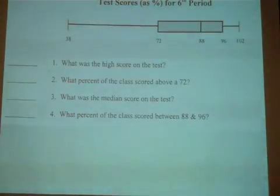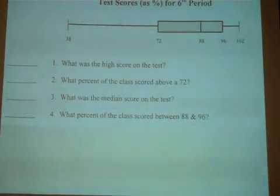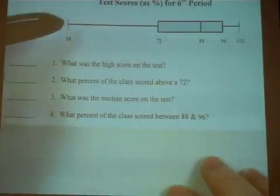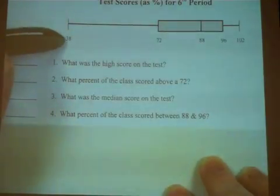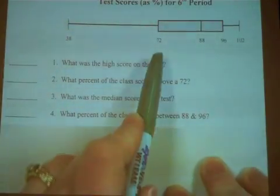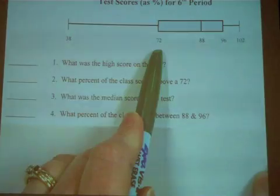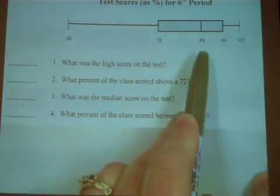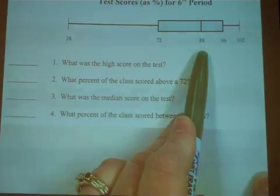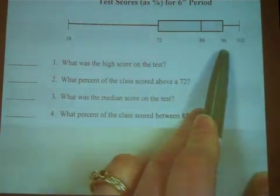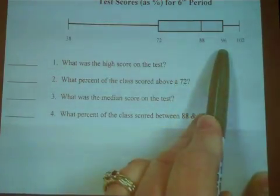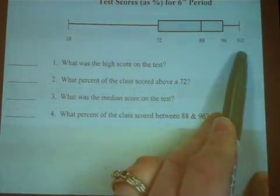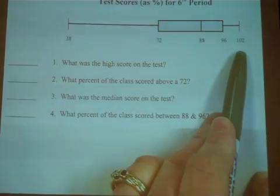We're going to look at another box and whisker. This number here is 38, this number here is 72, this is 88, this is 96, and this is 102.